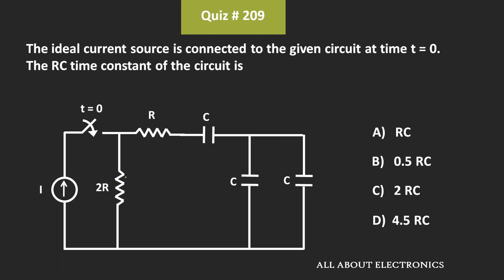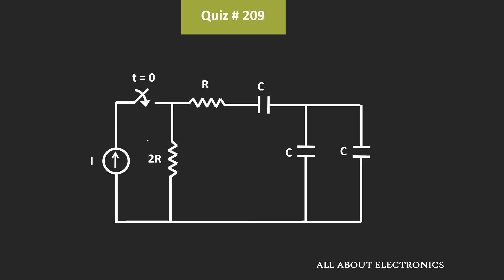Hey friends, welcome to the YouTube channel all about electronics. So in this question, we have been asked to find the RC time constant of the given circuit. Now in this question, we have been given that at time t is equal to 0, this current source is connected to this circuit.